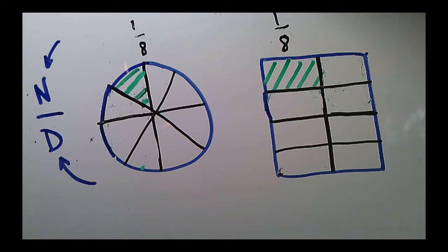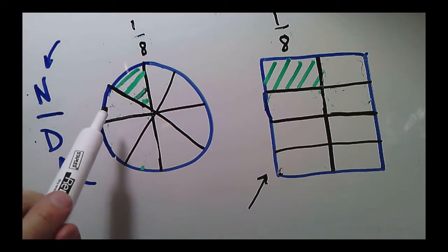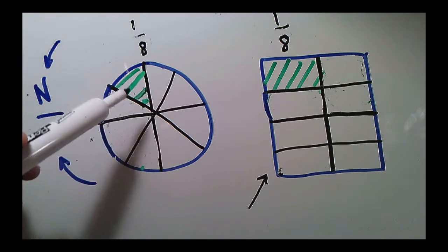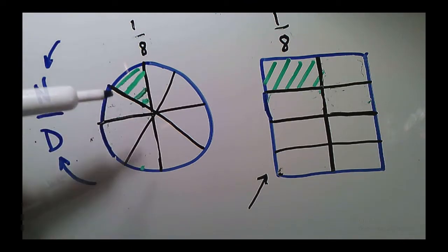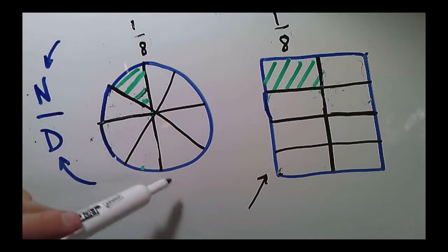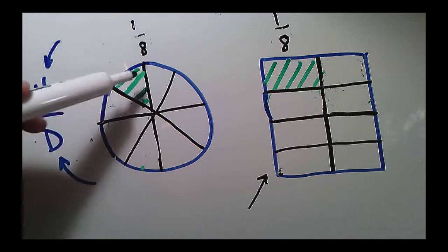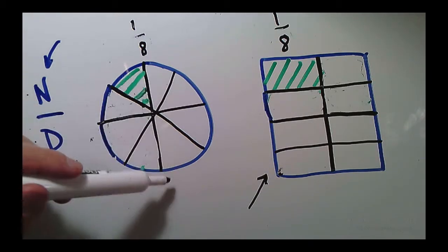So I would say at this point, I like my rectangular model a little bit better than my circular model. It's pretty close still here. But what I was trying to demonstrate here is that when I go up by my even numbers, I can just keep cutting them in half. So from 1 half to 1 fourth to 1 eighth.